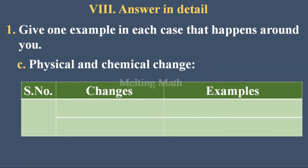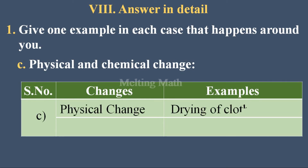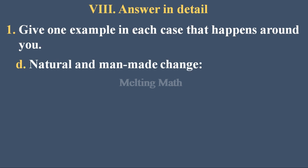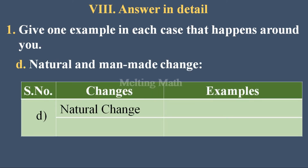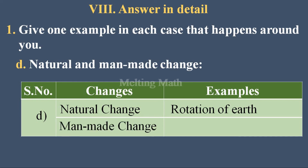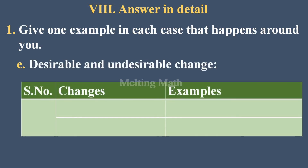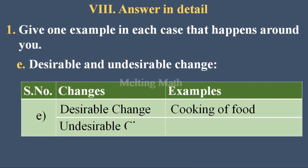Physical change example: drying of cloth. Chemical change example: rusting of iron. Natural change example: rotation of the earth. Man-made change example: construction of a building. Desirable change example: cooking of food. Undesirable change example: deforestation.